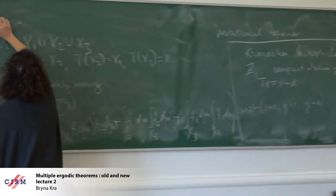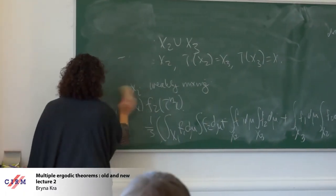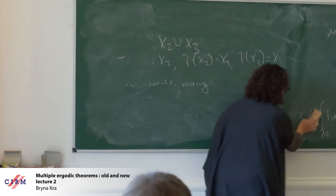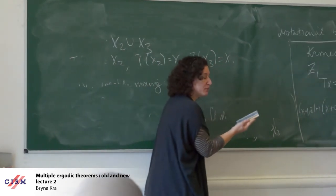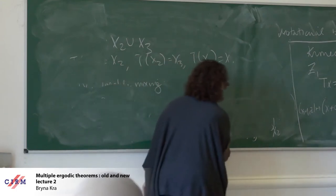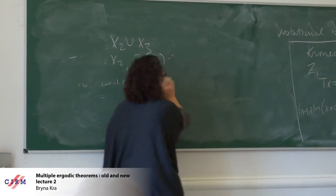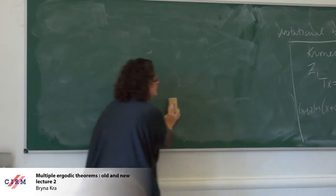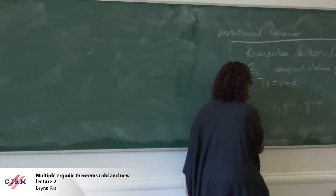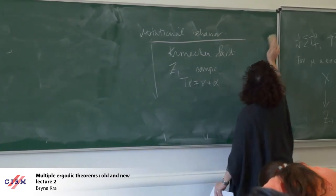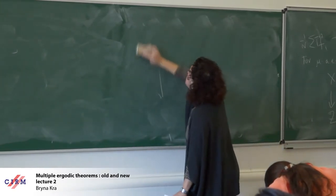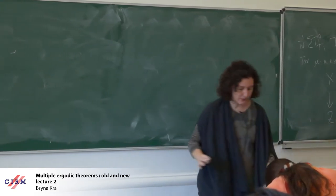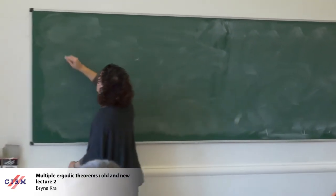Several people yesterday asked me if I could give a very explicit example of a structural theorem. The simplest structural theorem would be the von Neumann ergodic theorem, which says that the structure is the invariant sigma algebra controlling those averages — but that doesn't really tell us much. The first really non-trivial one was proved in Furstenberg's paper: the Kronecker factor is the first non-trivial factor. Let me state this carefully.